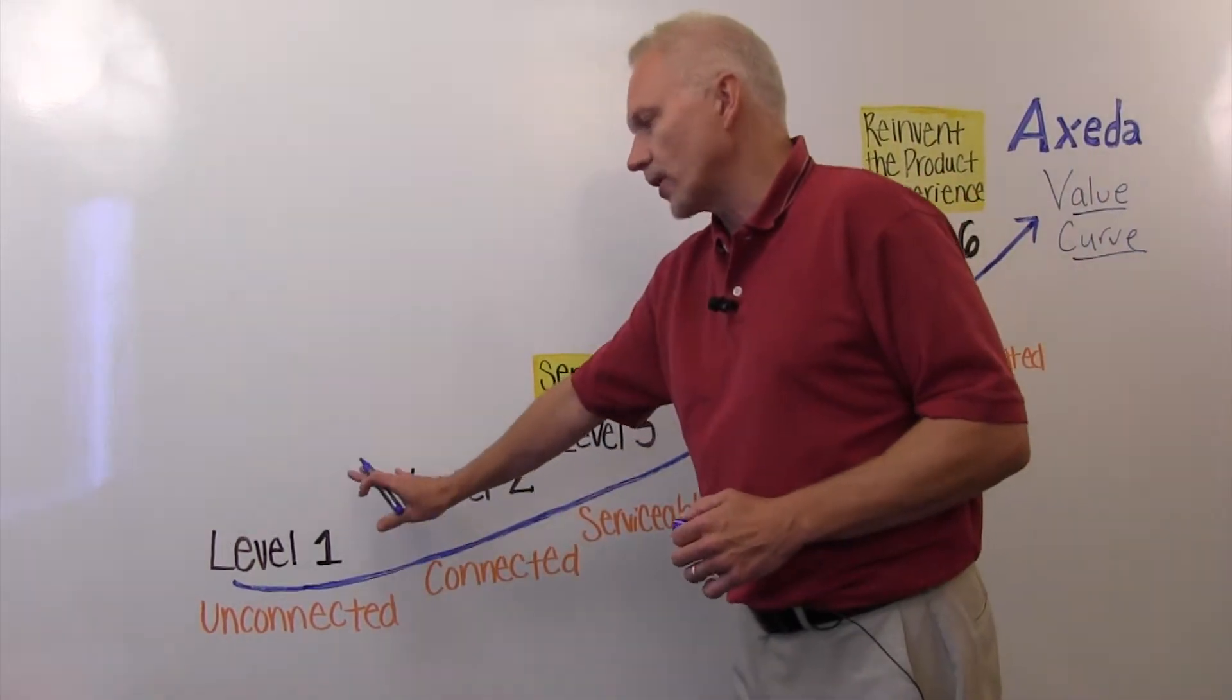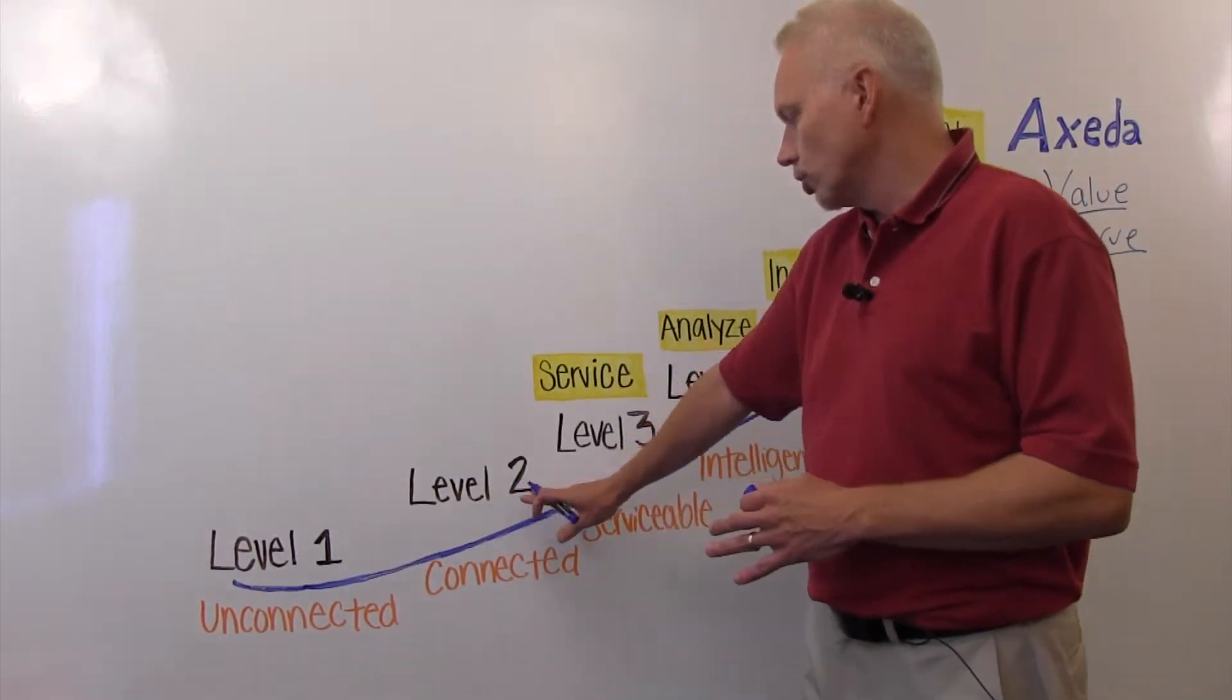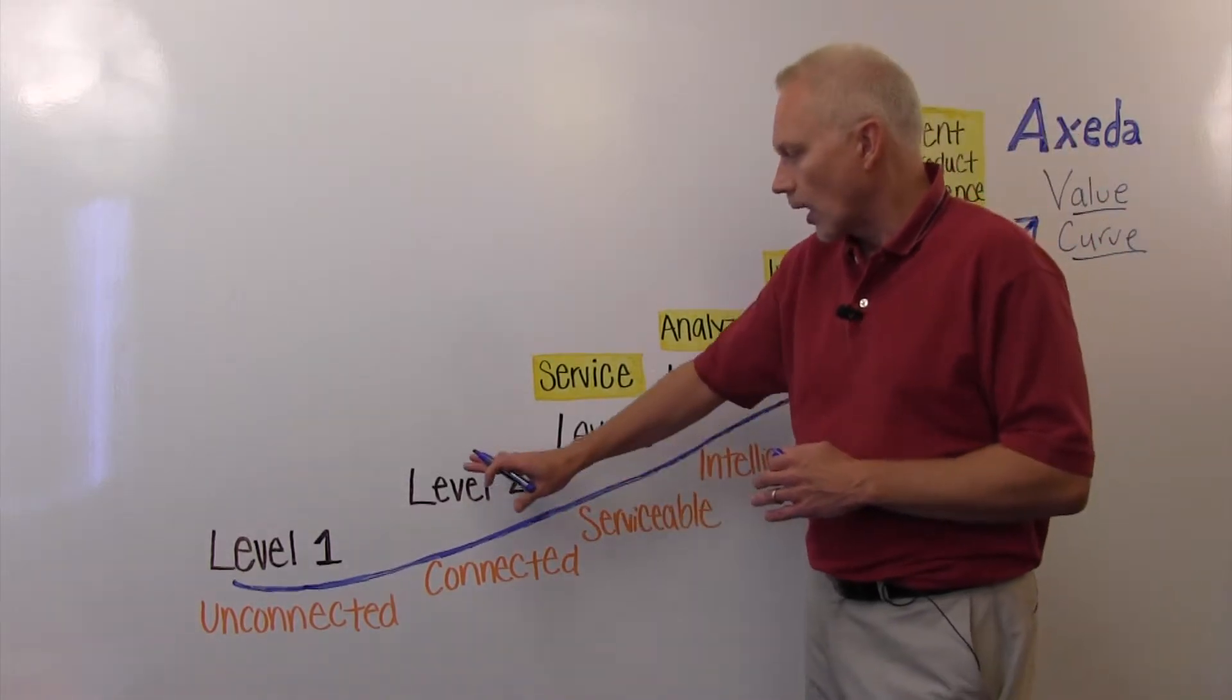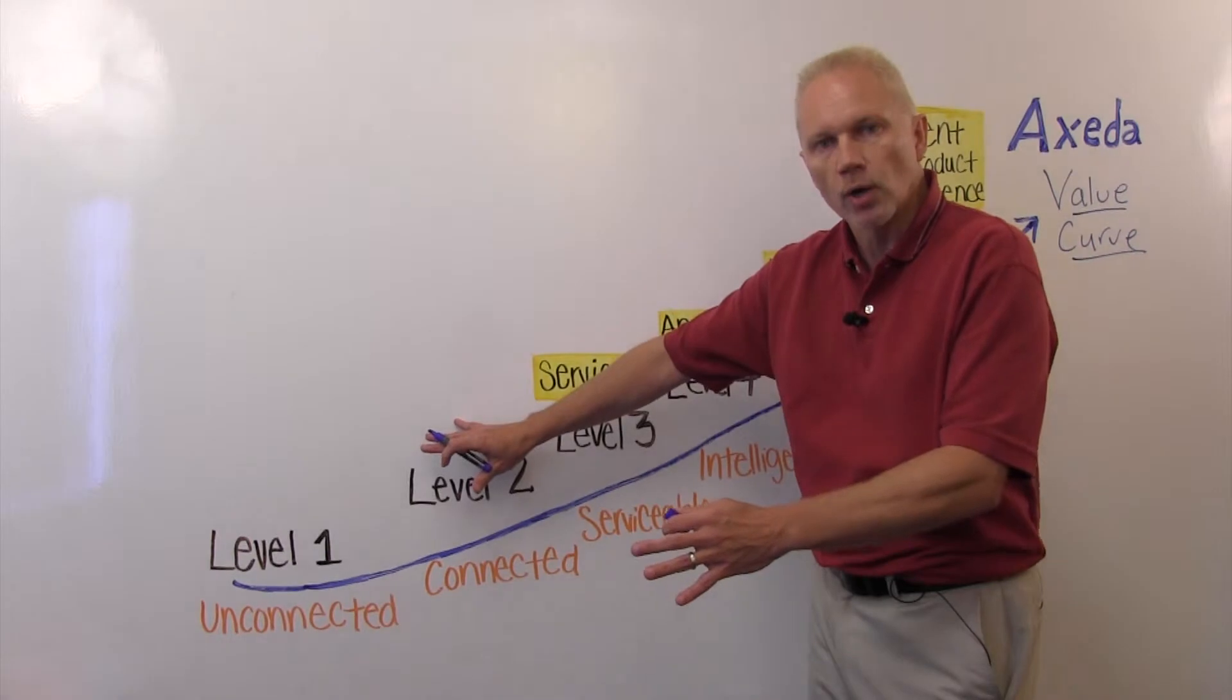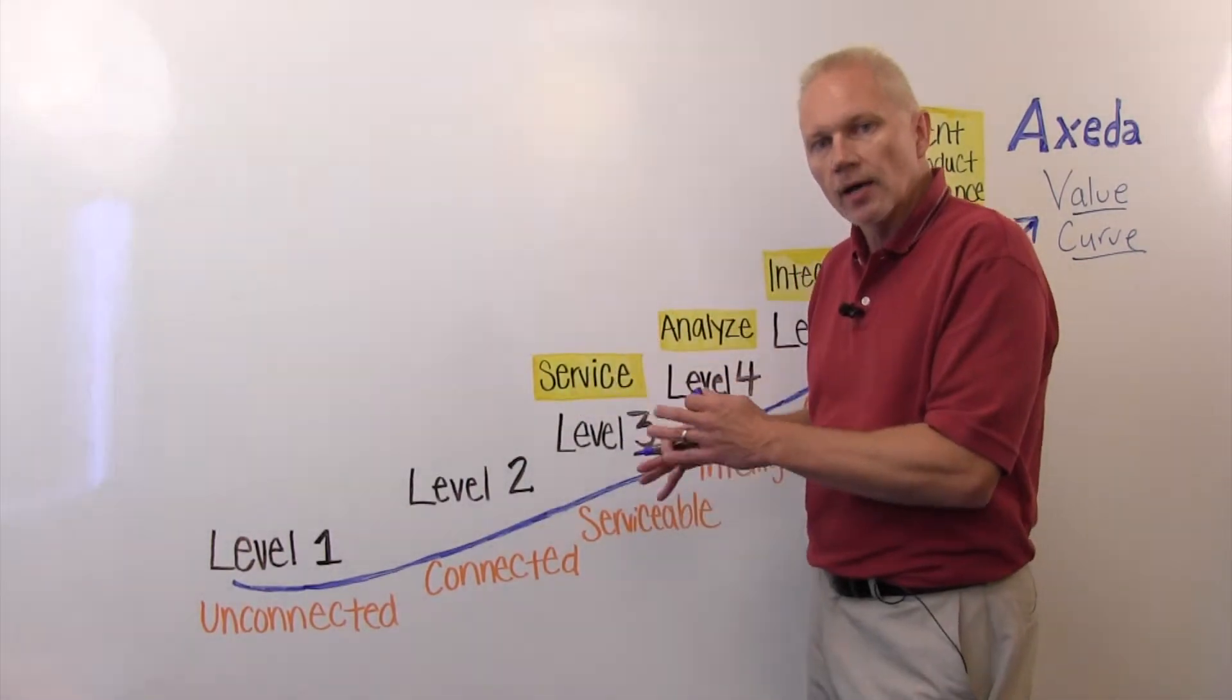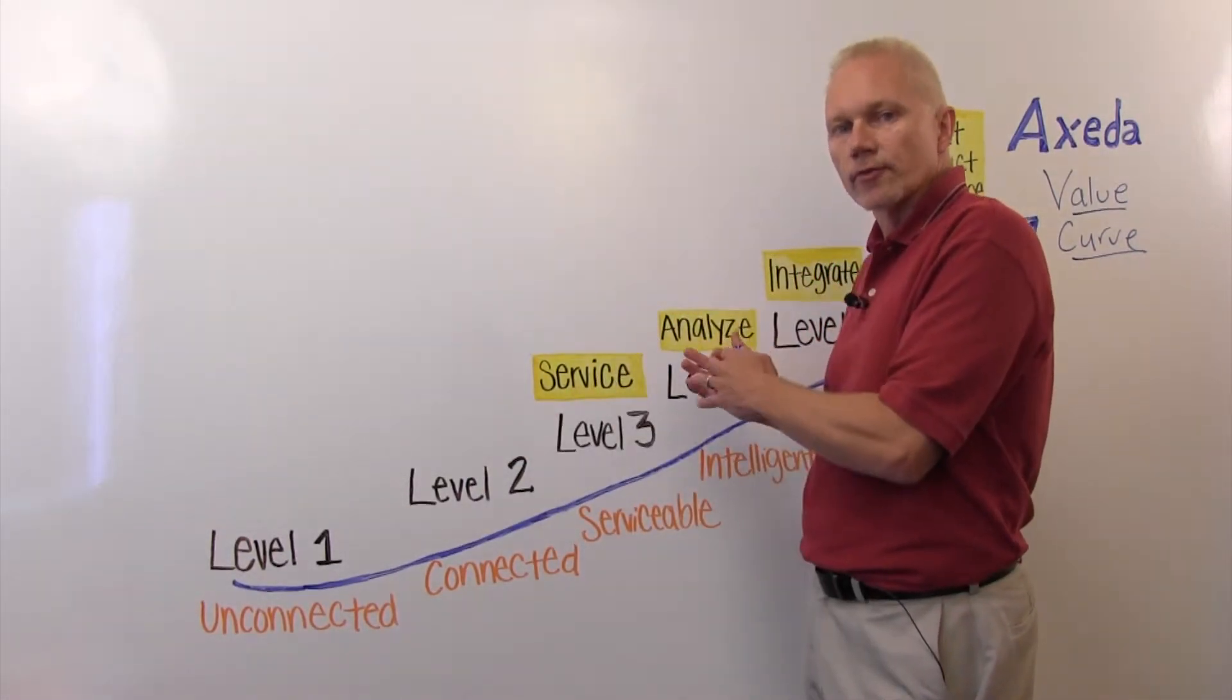Level one is really where everyone is before they connect. And level two, you get into putting some kind of agent or connectivity on your machine and starting to collect that machine data and at least store it for future use.